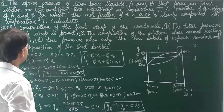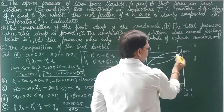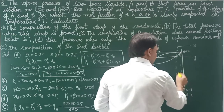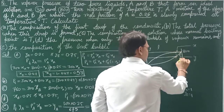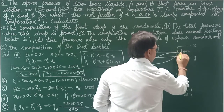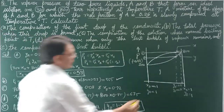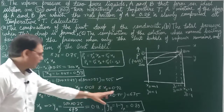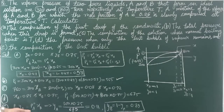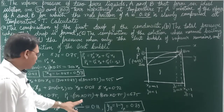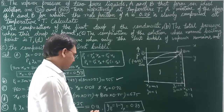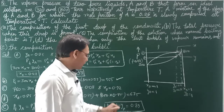Part E asks for the composition of the last bubble. The liquid phase composition is already known; now we need the vapor phase (bubble) composition. Using P_total × y_A = P°_A × x_A: 675 × y_A = 300 × 0.25. The graph touches the vapor line at this pressure. Solving gives y_A ≈ 0.11 and y_B ≈ 0.89.